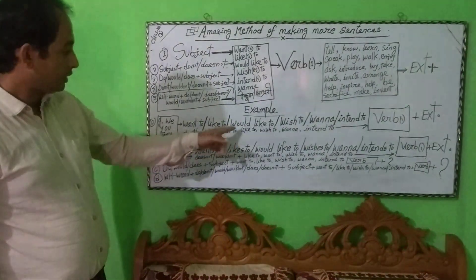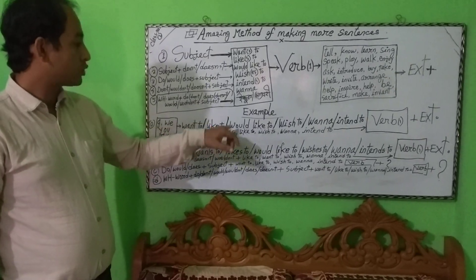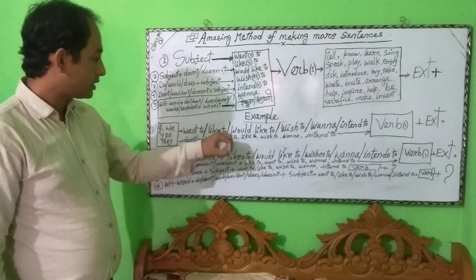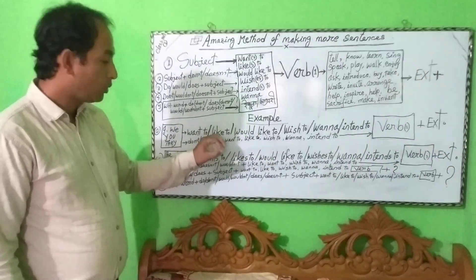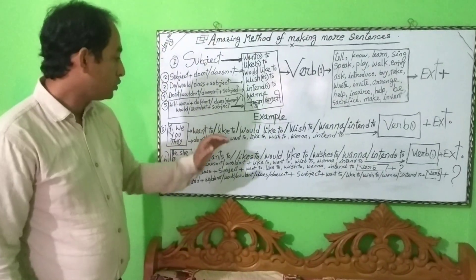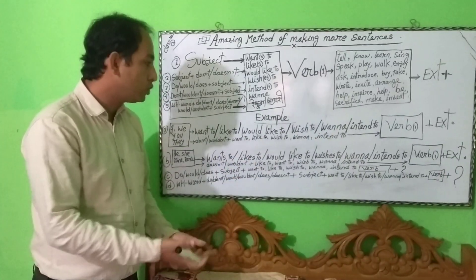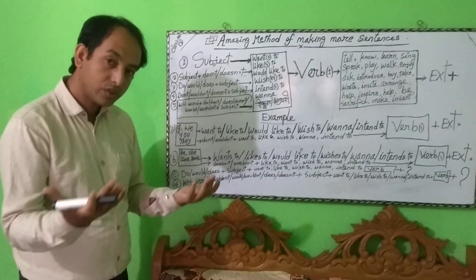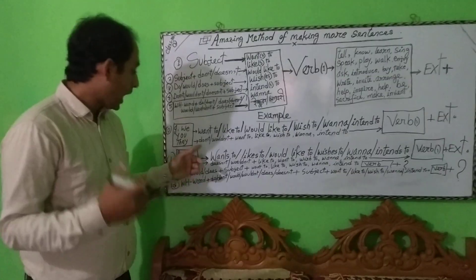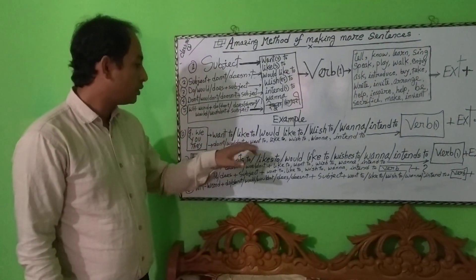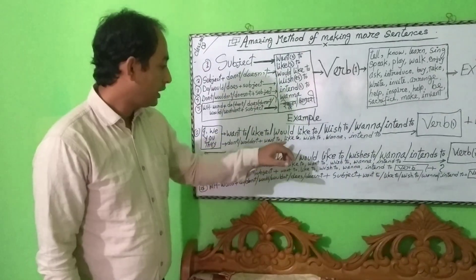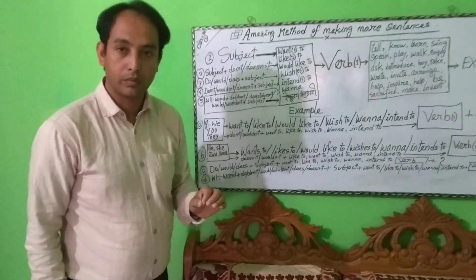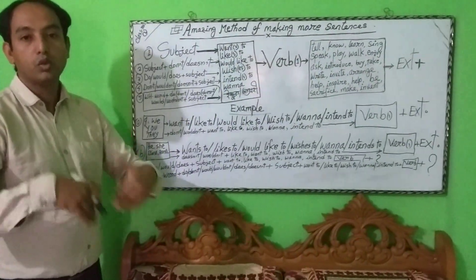Follow the examples here according to the subject, number, and person. Look at the rules: want to, like to, would like to, wish to, wanna, intend to — anyone, as indicated, you can use them to make a sentence. If you want to make a negative sentence: I don't — want to, like to, wish to, wanna, intend to — anyone you can choose, then make a sentence using the best verb from your vocabulary.